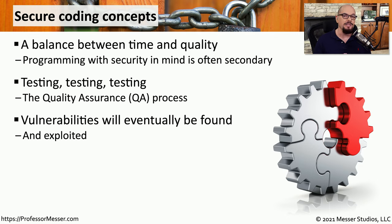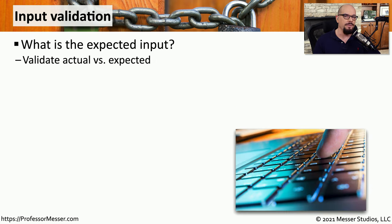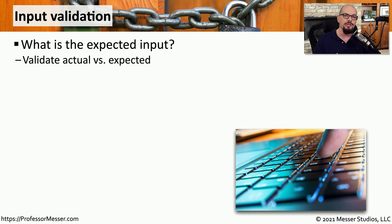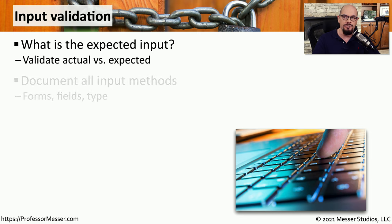Eventually, someone is going to find those vulnerabilities and take advantage of them. One task for the developer is to always make sure that they understand the type of input going into the application. This input validation should always occur whenever information is going into the application process, which means the developer needs to document every place where data is entering the application.